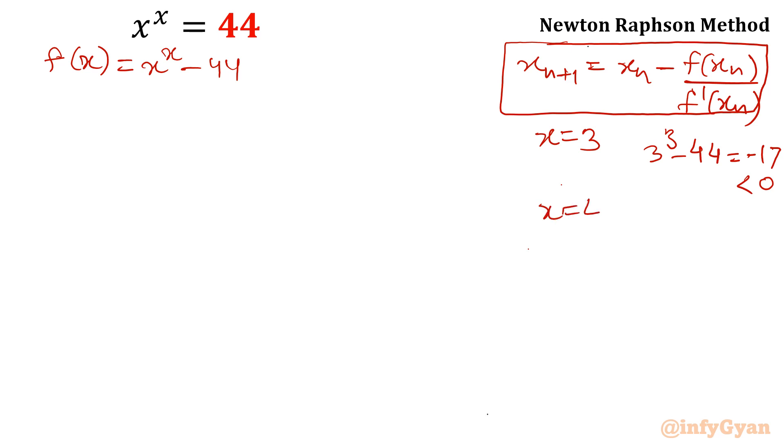Now I am putting x equal to 4. 4 raised to the power 4 minus 44. That would be obviously positive, 256 minus 44, so 212, which is positive number. Point is, in between x equal to 3 and x equal to 4 our solution is there. So this is the method, this is the strategy we need to follow.